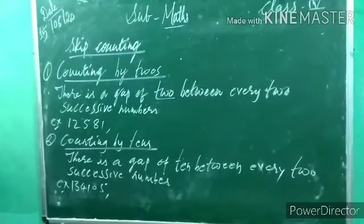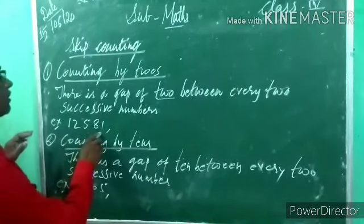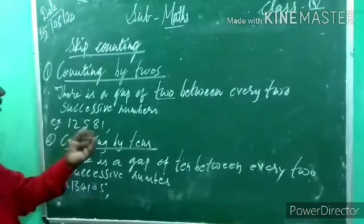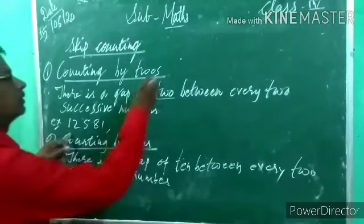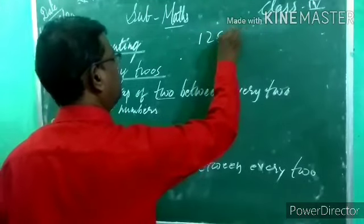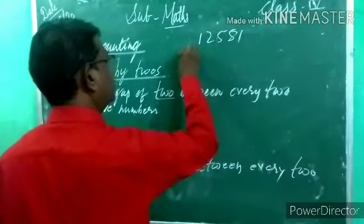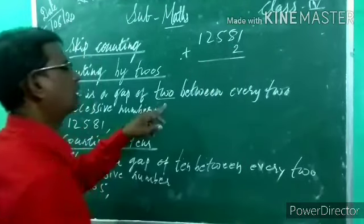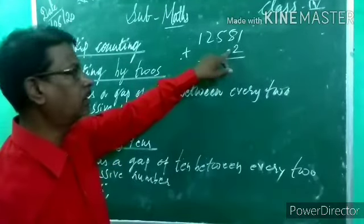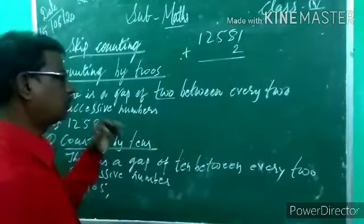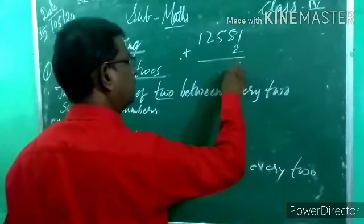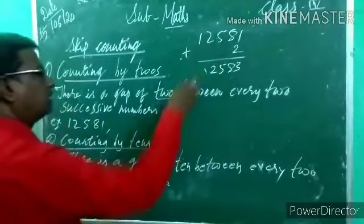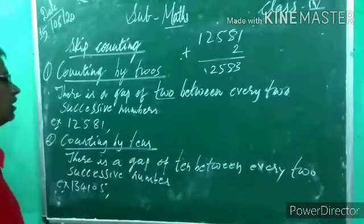The number is 12,581. We have to add 2. After 81, add 2: 81 plus 2 is 83. So 12,581 plus 2, counting by 2, we add 2. So: 5 plus 4 is 9, remaining number stays as it is. So 12,583.